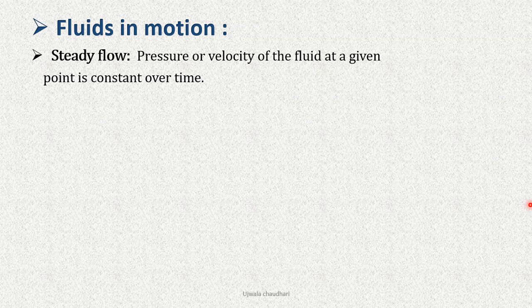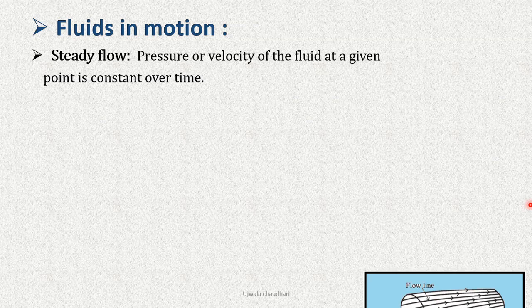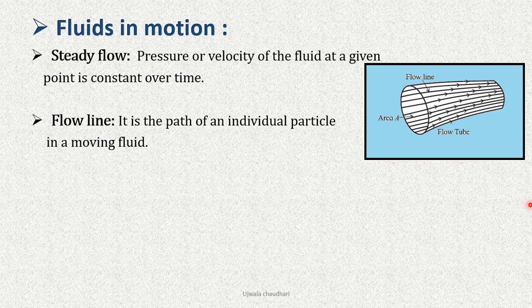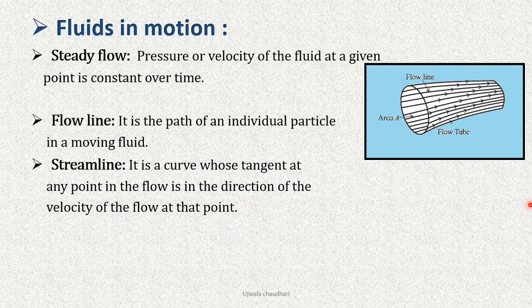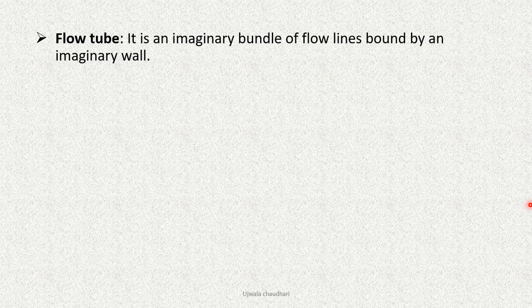Fluid in motion: Steady flow - pressure or velocity of the fluid at a given point is constant over time. Flow line - it is the path of an individual particle in a moving fluid. Streamline flow - it is a curve whose tangent at any point in the flow is in the direction of the velocity of the flow at that point.